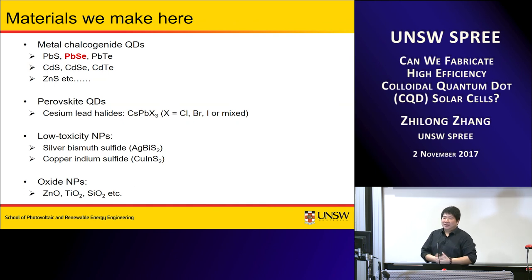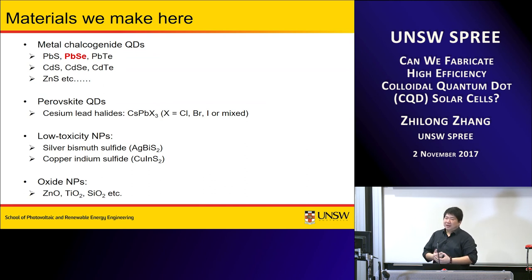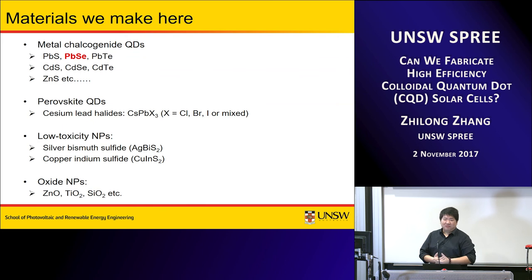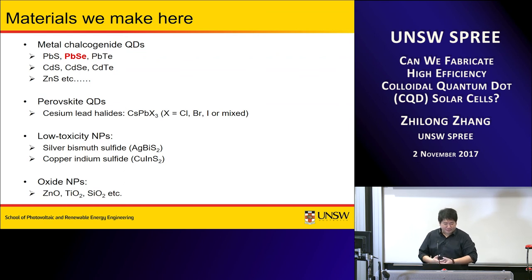There is a huge category of materials we can synthesize here — things like metal chalcogenide quantum dots: lead-based, cadmium-based, or zinc-based dots. At the moment lead-based quantum dots are the most common in our lab. We also make perovskite quantum dots for solar cell applications, and we are interested in low toxicity nanoparticles such as copper indium sulfide or silver bismuth sulfide. We can also make oxide nanoparticles like antimony metal oxide, zinc oxide, titanium dioxide, and silicon dioxide for optical purposes.